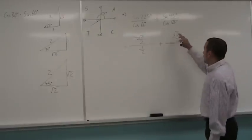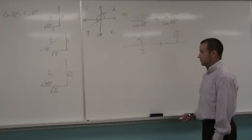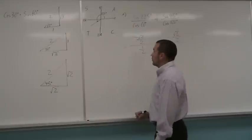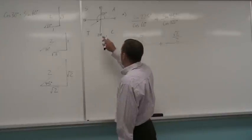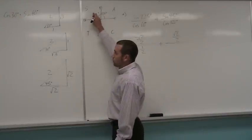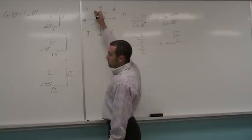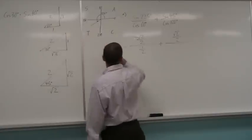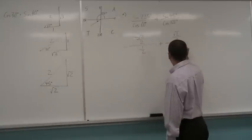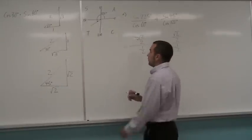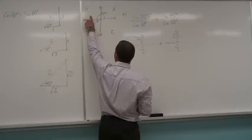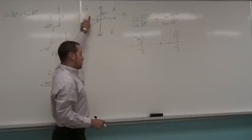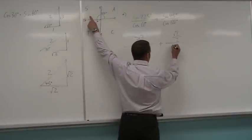And then on the bottom, cos of 120. So 120 degrees, right here in this quadrant, 120 is 60 away from 180. So I'm looking really at the cos of 60, which is 1 over 2. And then I have to look to see is positive or negative. Well, cos is negative in this quadrant. So this is negative right here.